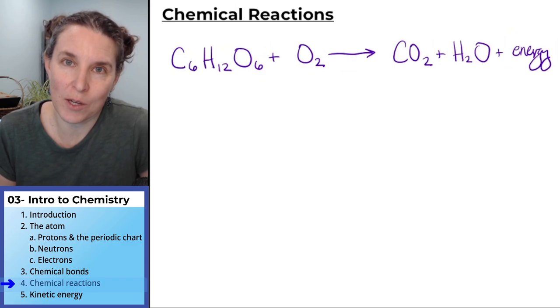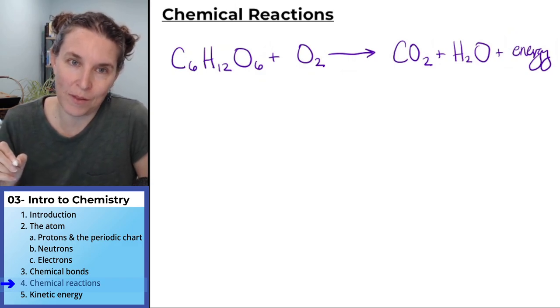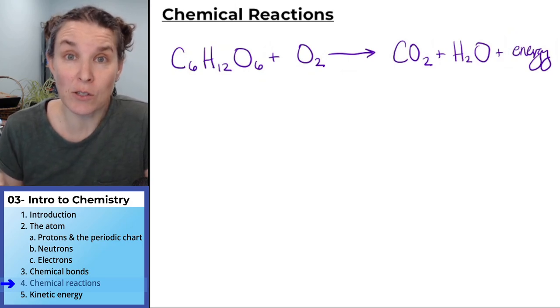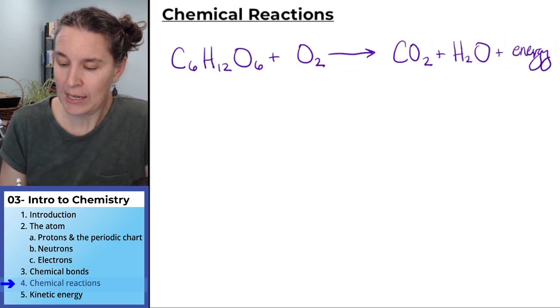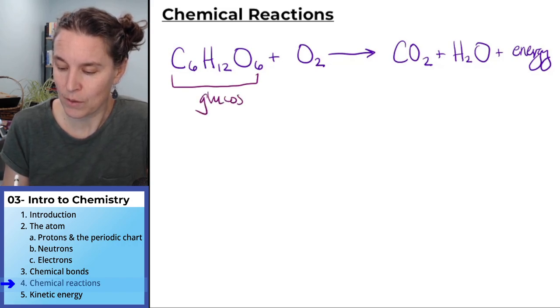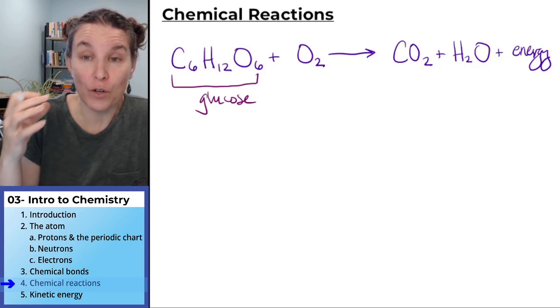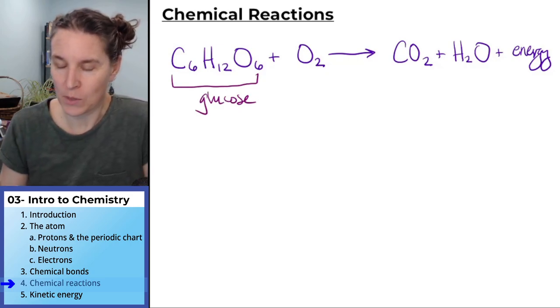This is my favorite chemical equation, except for the one that goes backwards, which is photosynthesis. This is cellular respiration and it is glucose. I've shown you the chemical formula for glucose and we'll break that down and see what that is saying.